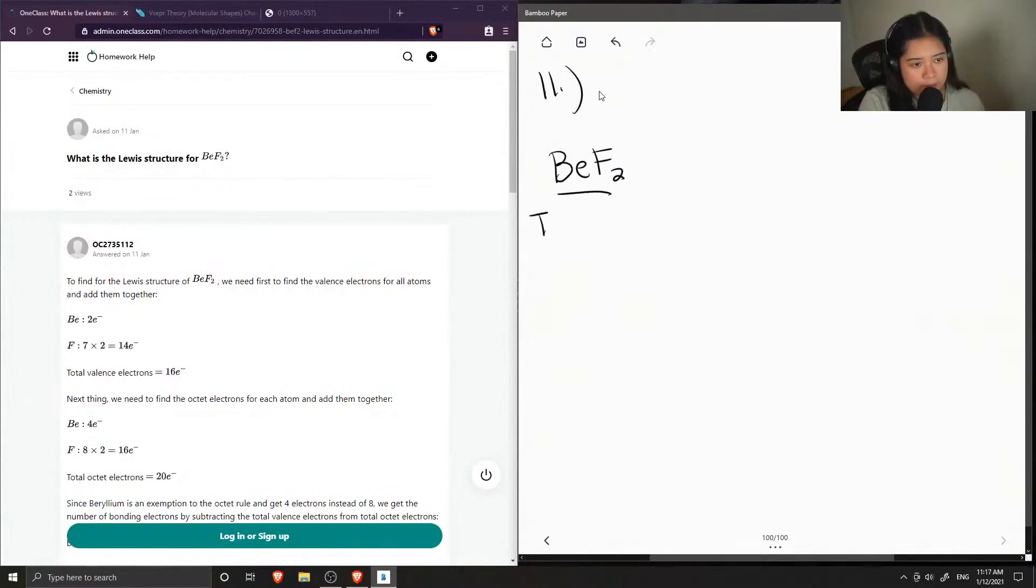Okay, first, let's find the total number of valence electrons. So this will help us draw out our Lewis structure.